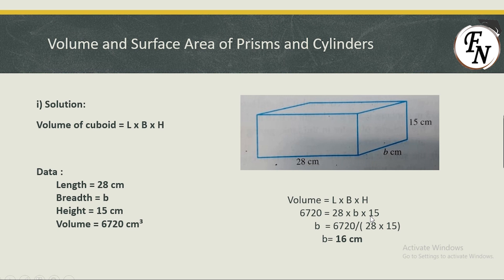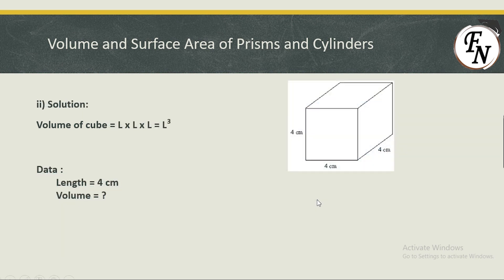First, multiply 28 and 15, then take that product to the other side of the equation. Since it is multiplying on one side, it will divide on the other side — so 6720 divided by (28 × 15) gives the breadth. The answer is 16 cm. Now we have all three dimensions.